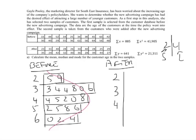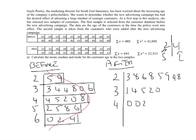Let's look at that. So 23, 31, 40, 28, 26, 34, 40, 28, 25, 29, 35, 24, 42, 32, 30, 28, 39, 44, 27.